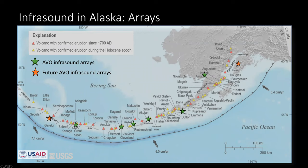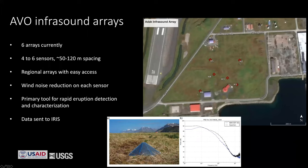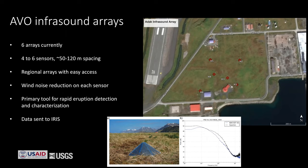Instead, we're hoping to install an array on the Kenai Peninsula in the next month or so that would cover the Cook Inlet volcanoes closest to Anchorage. Our regional infrasound arrays are placed in locations accessible by commercial aviation — places where we don't have to hire a ship or boat. Currently the arrays in Alaska all have between four and six elements, with sensor spacing typically 50 to about 120 meters.